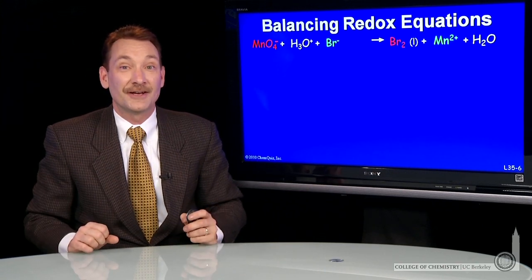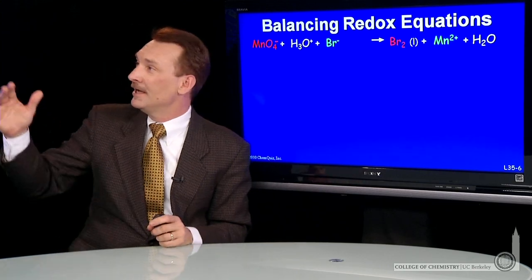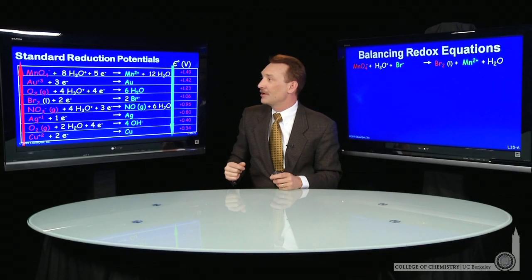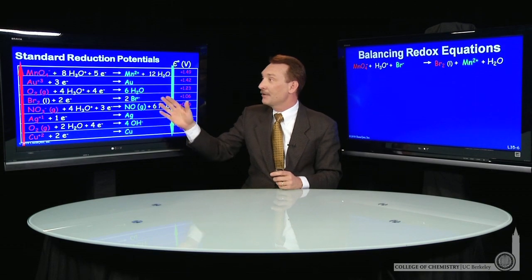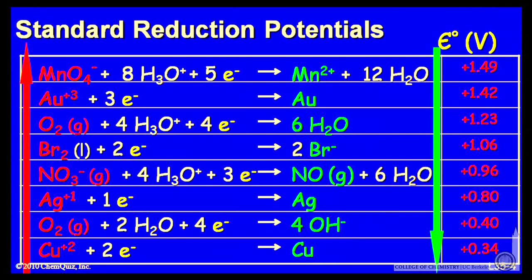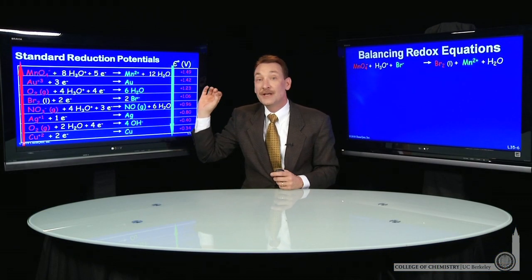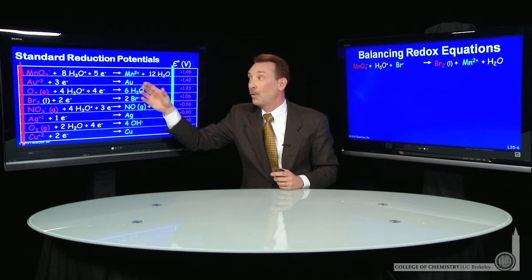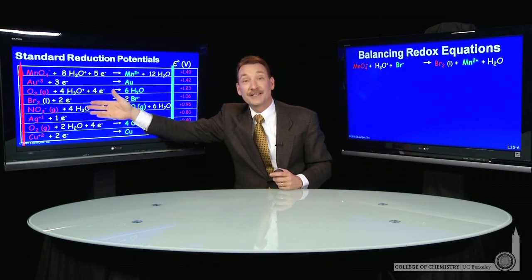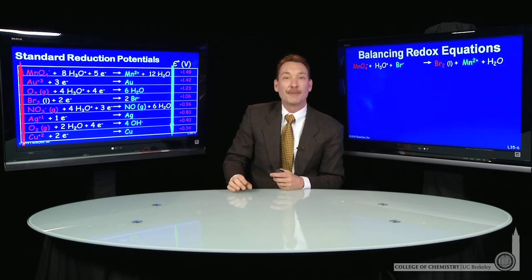So let's look at those two half cells. We can go back to our table. Here's our table of standard reduction potentials. And we can pick out, here's the permanganate half cell and here's the bromine half cell. So we can use those two, one as a reduction and one as an oxidation, to balance our chemical reaction.